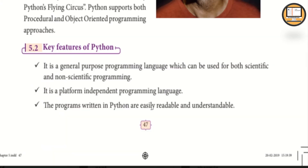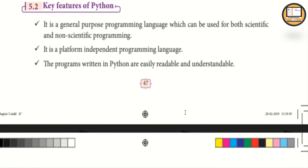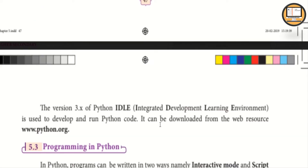Programs written in Python are easily readable and understandable, making it easy to learn. The version 3.x of Python IDLE is used to develop and run Python code. It can be downloaded from the web resource www.python.org.